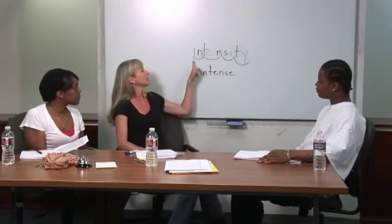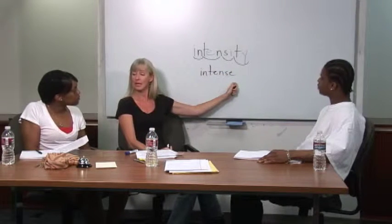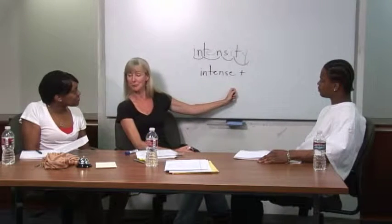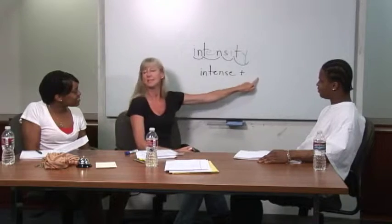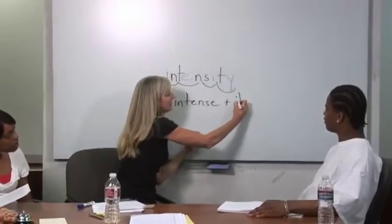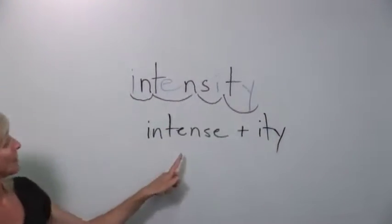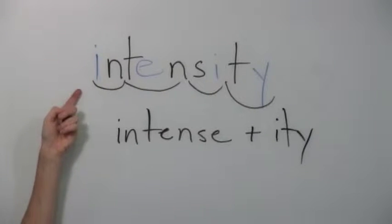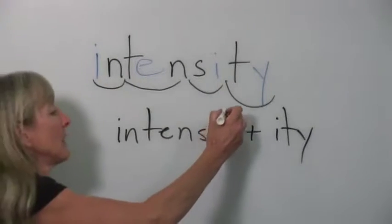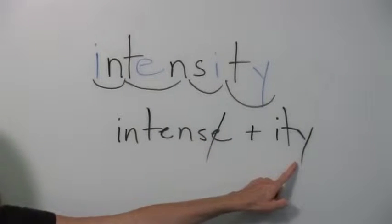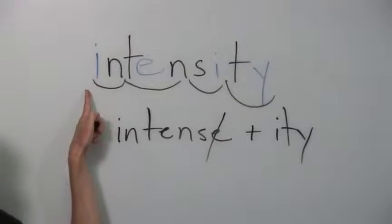This time I'm going to do it with the full word intensity, which is really this base word intense plus the suffix ending I-T-Y. Kendall, what letter did we have to drop from the base word when we actually spell the whole word intensity? The E. Right — we got rid of that E. So intense plus the suffix ending I-T-Y gives us this word, intensity.